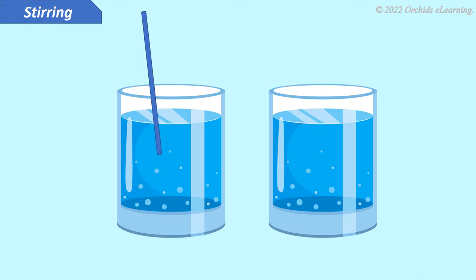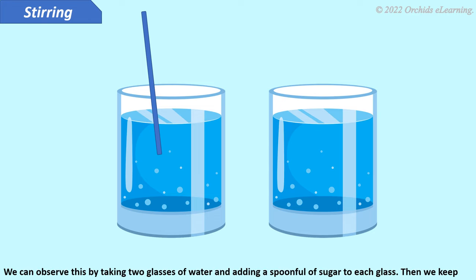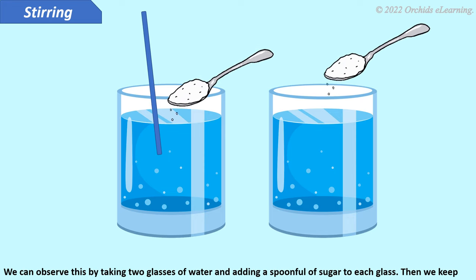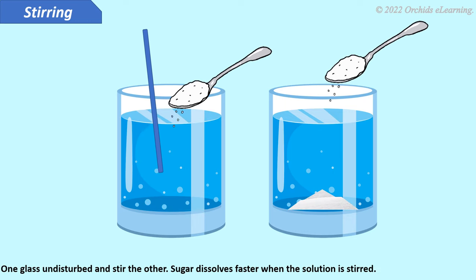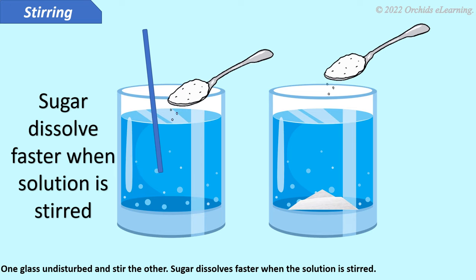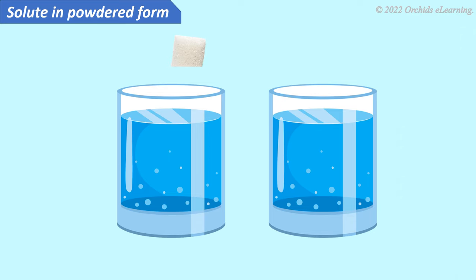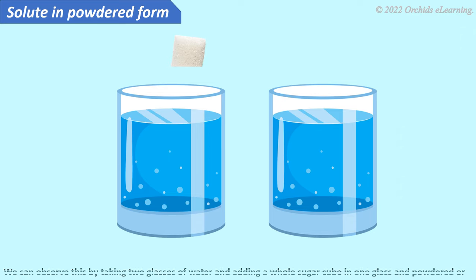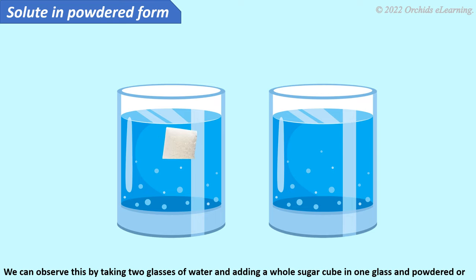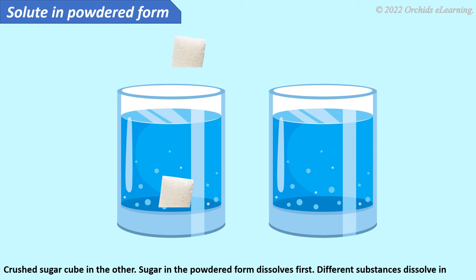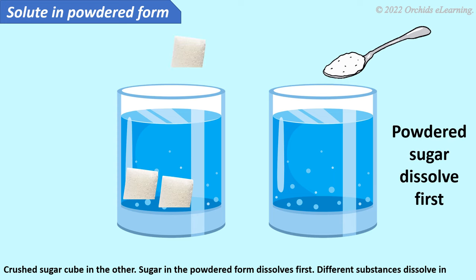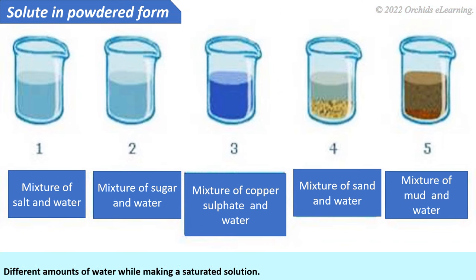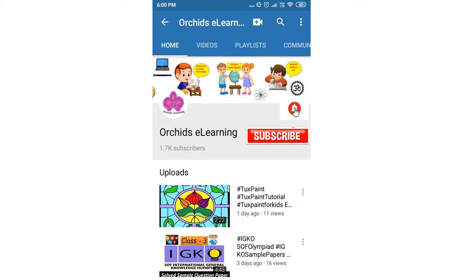Stirring: we can observe this by taking two glasses of water and adding a spoonful of sugar to each. We keep one glass undisturbed and stir the other — sugar dissolves faster when the solution is stirred. Solute in powdered form: taking two glasses of water, we add a whole sugar cube to one and powdered or crushed sugar to the other — sugar in powdered form dissolves first. Different substances dissolve in different amounts of water while making a saturated solution.